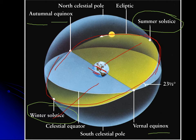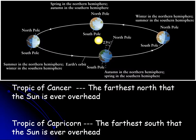But wait — the Sun isn't really moving; it's Earth that's moving. Earth goes around the Sun tilted 23.5 degrees on its axis. When Earth is in a configuration where the Sun shines mainly on the southern part, the days are long in the south — it's summer in the southern hemisphere and winter in the northern hemisphere.